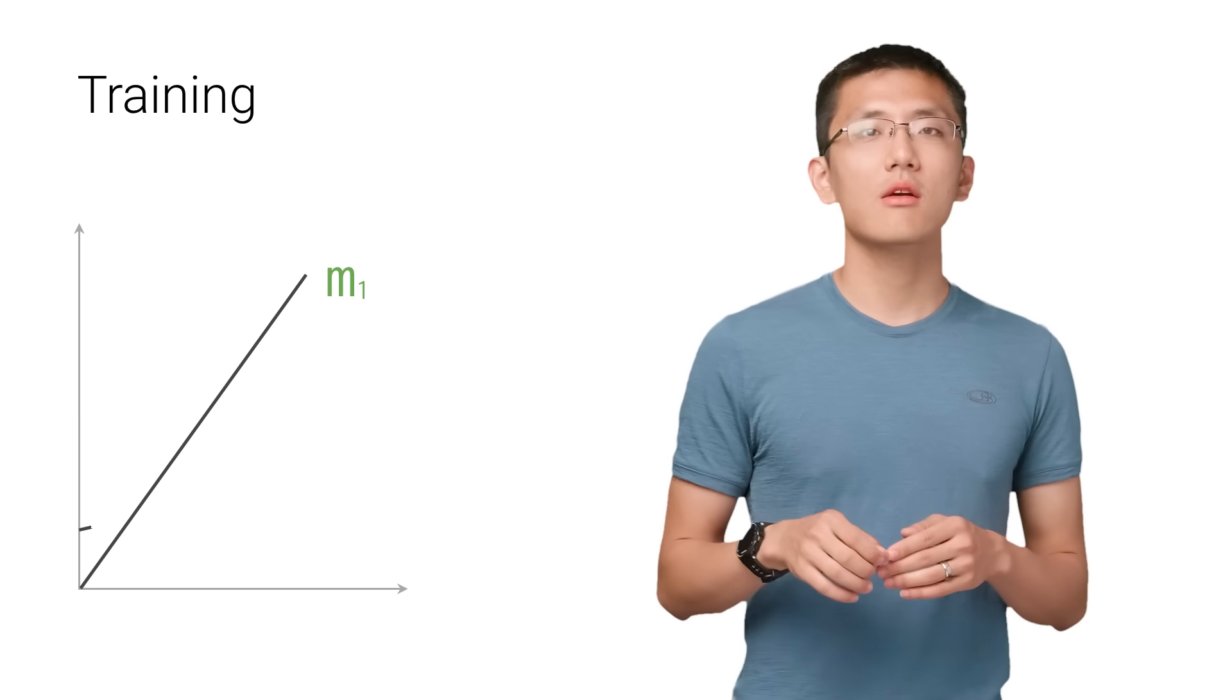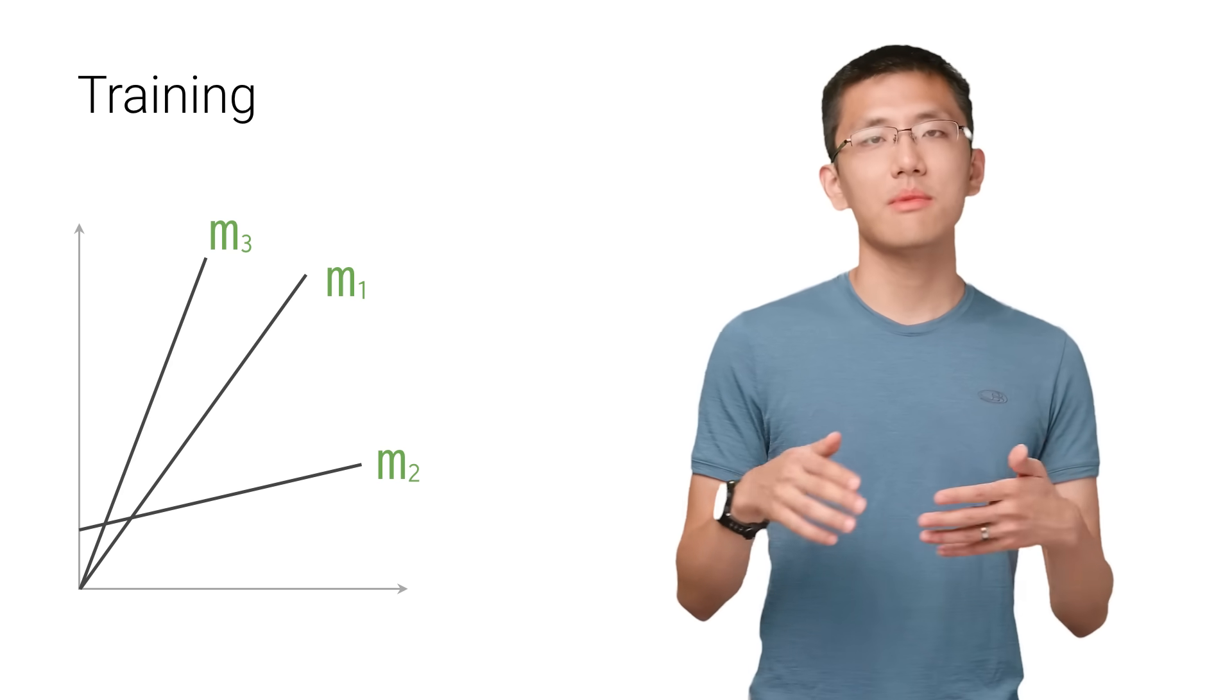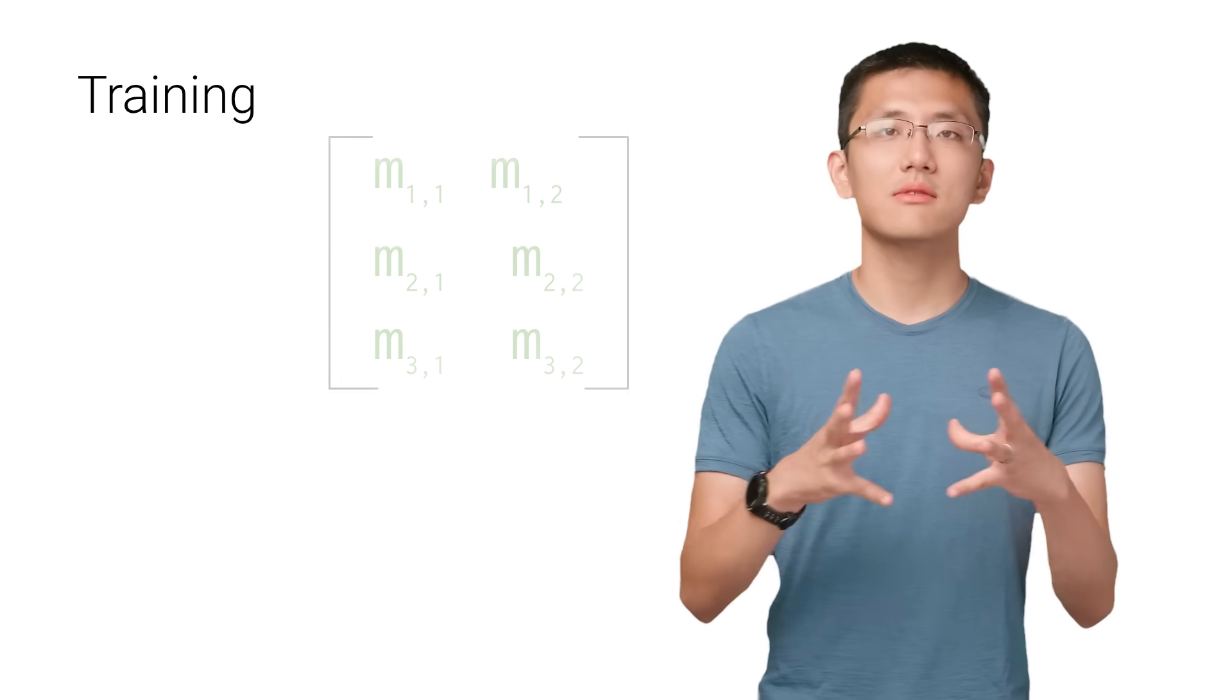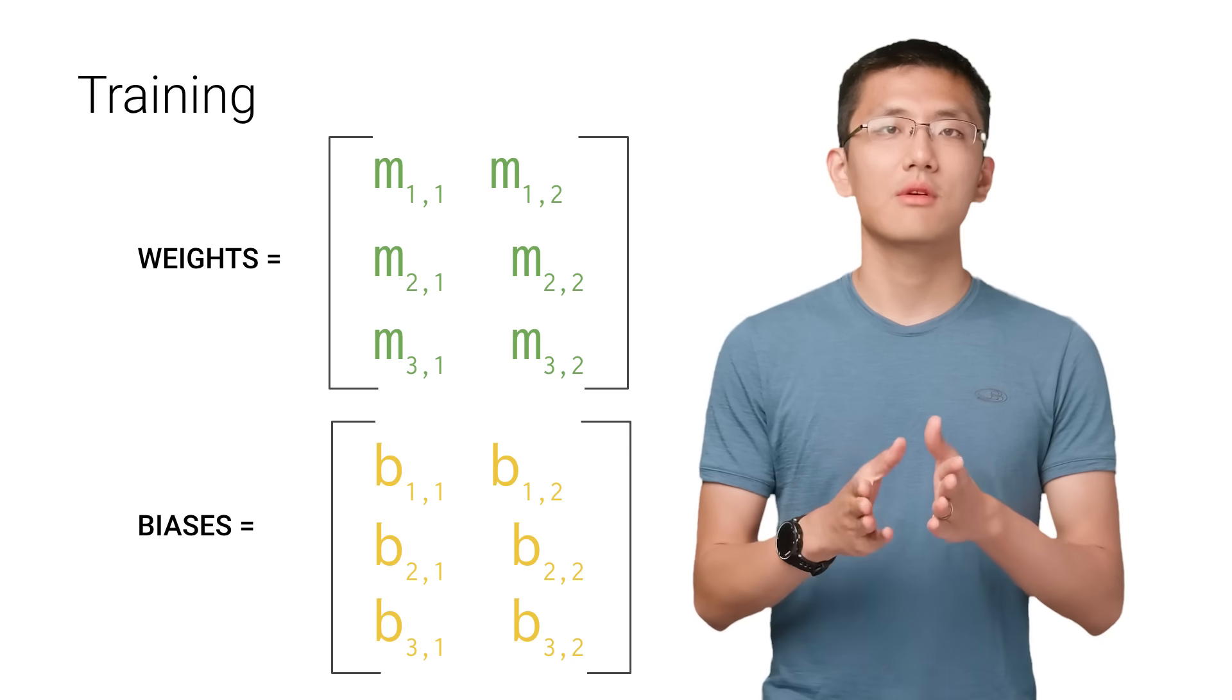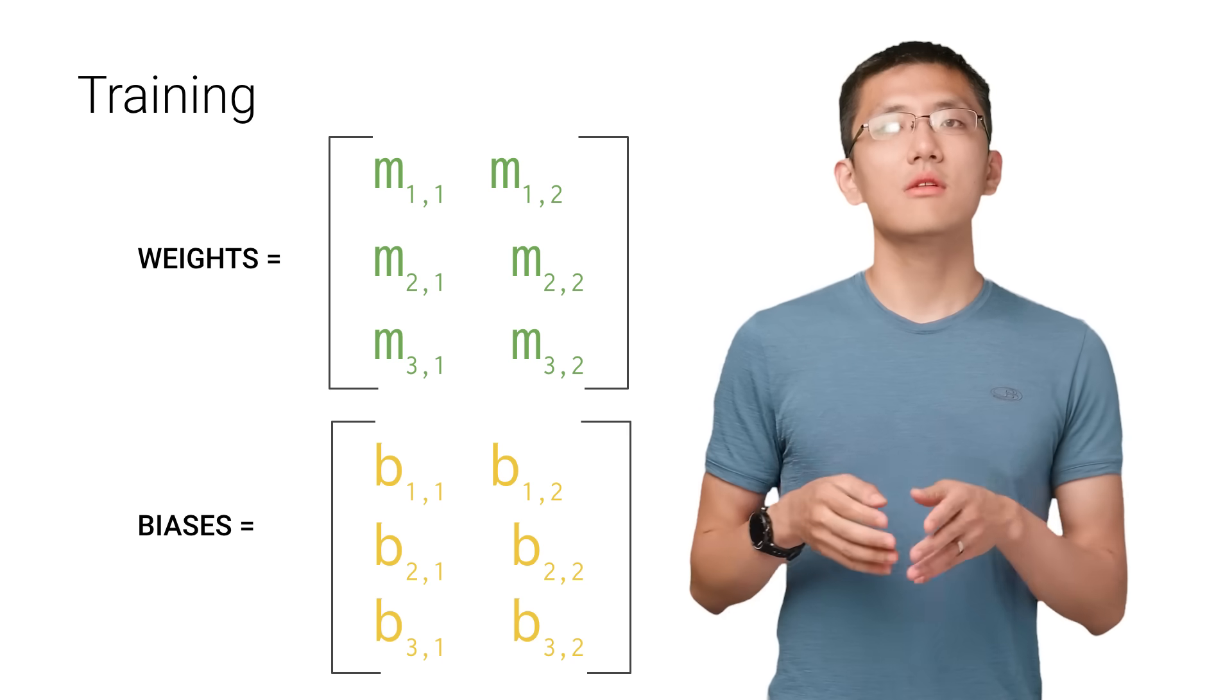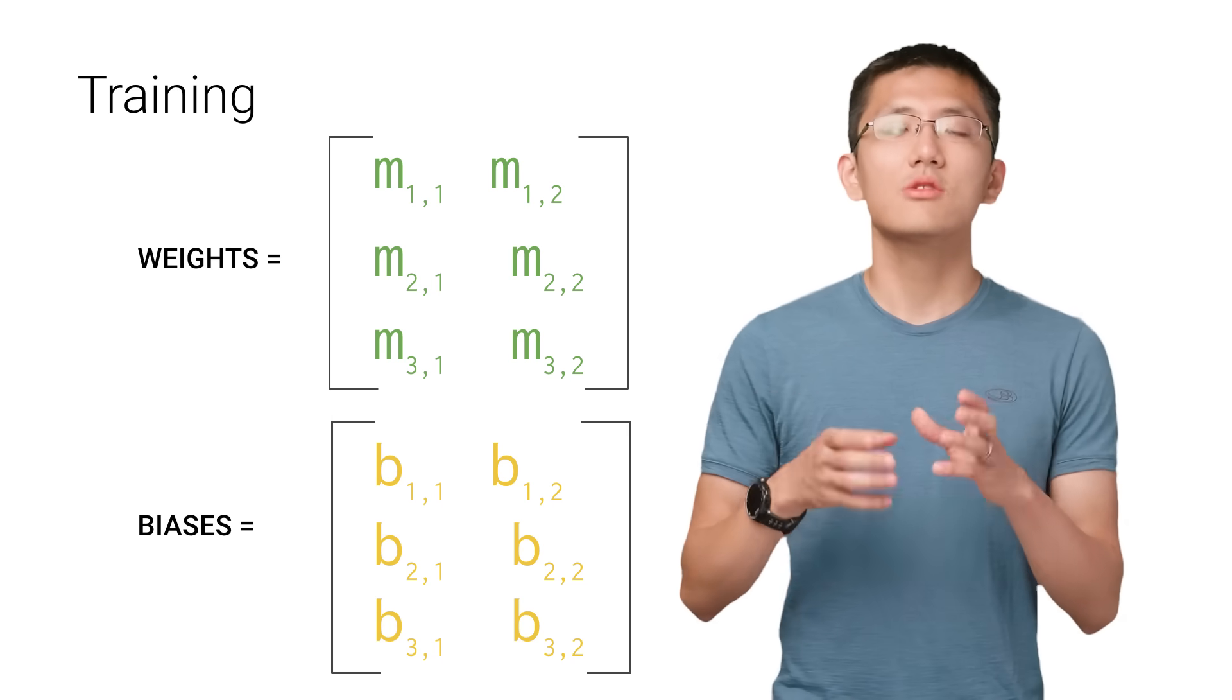In machine learning, there are many m's, since there may be many features. The collection of these values is usually formed into a matrix that is denoted w for the weights matrix. Similarly for b, we arrange them together, and that's called the biases.